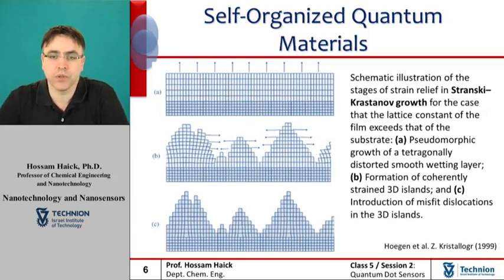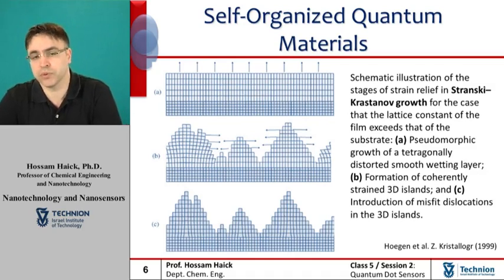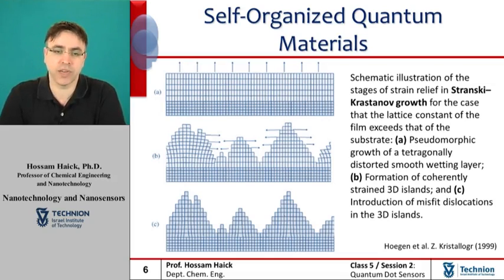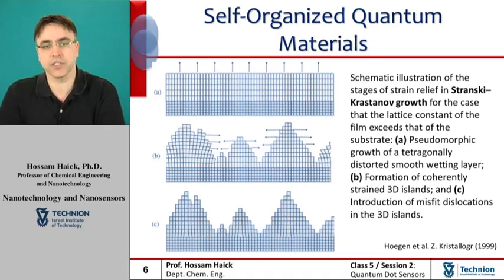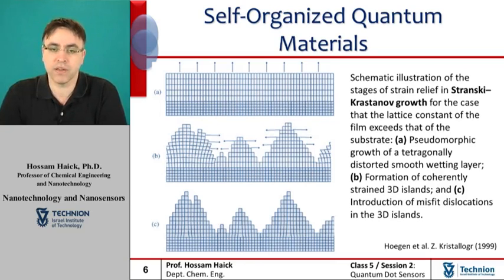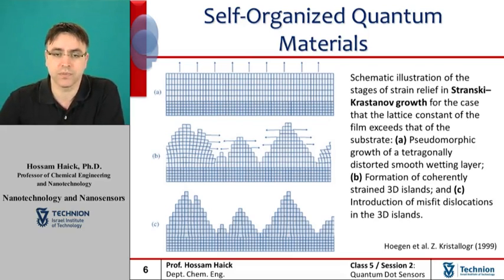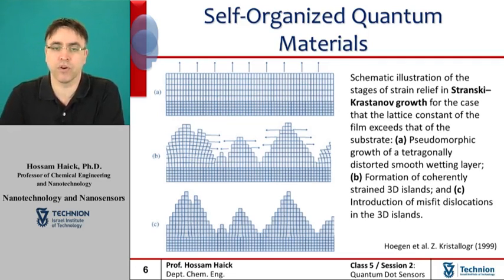Another way to produce quantum dots is by the so-called Stranski-Krastanov growth mode. In this growth mode, isolated islands form spontaneously above a certain critical thickness to relieve the mismatched strain energy. More specifically, self-assembled quantum dots nucleate spontaneously under certain conditions during molecular beam epitaxy (MBE) and metal-organic vapor phase epitaxy, when a material is grown on a substrate to which it is not lattice-matched. The resulting strain produces coherently strained islands on top of a two-dimensional wetting layer, and these islands can subsequently be buried to form the quantum dot.